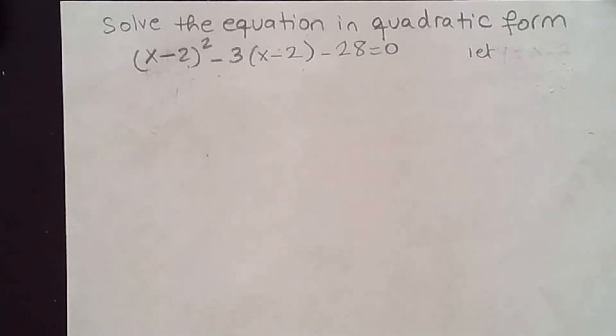Solve the equation in quadratic form. So we have (x-2)² - 3(x-2) - 28 = 0. If you notice we have a binomial raised to the second power and the same binomial is in the middle term.